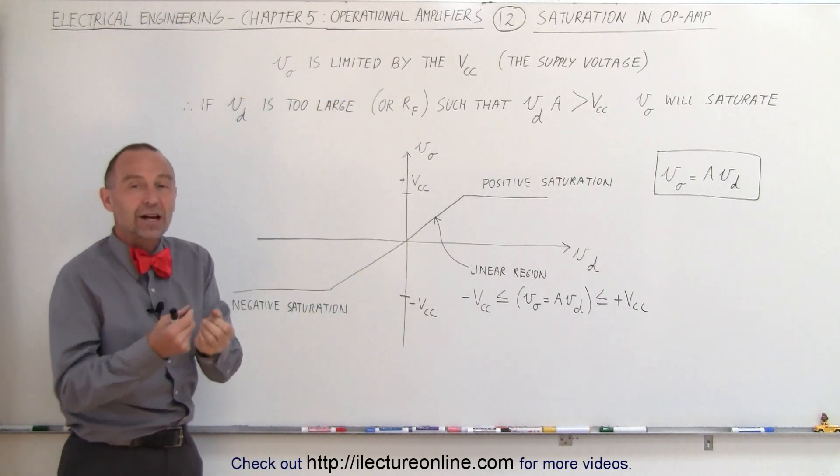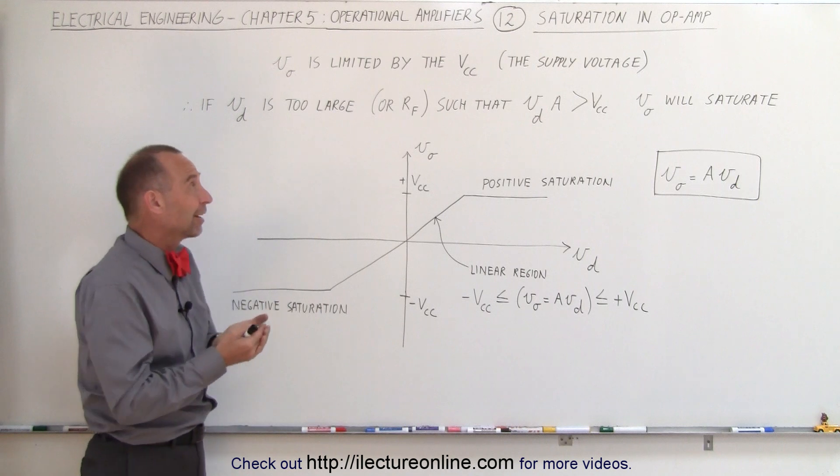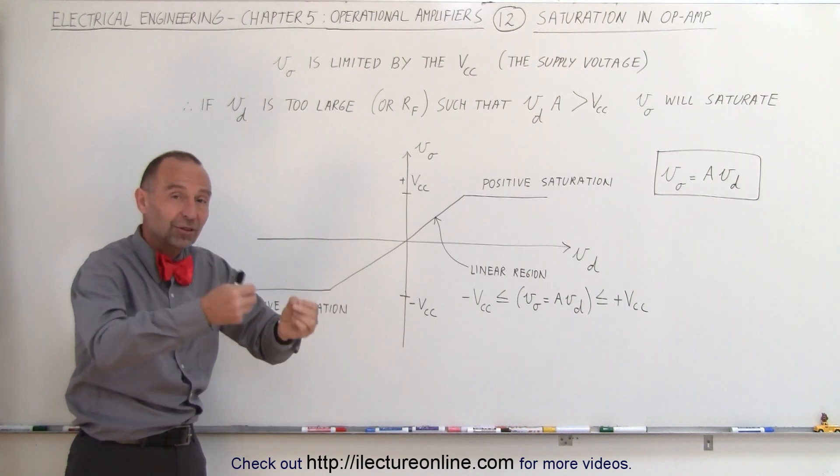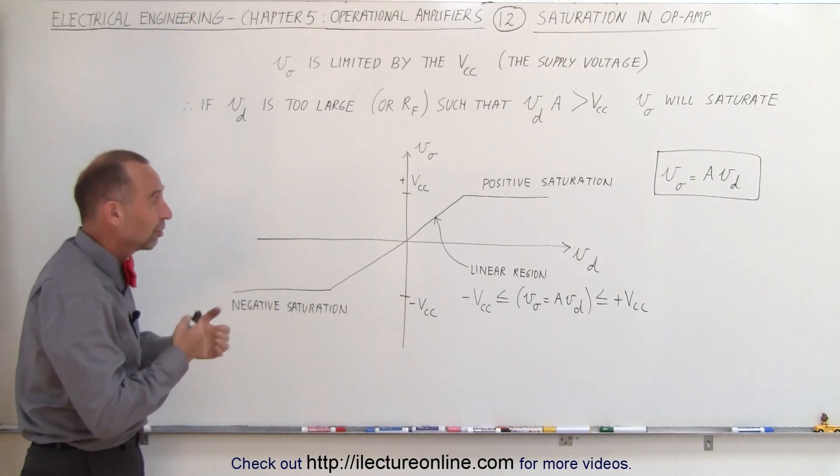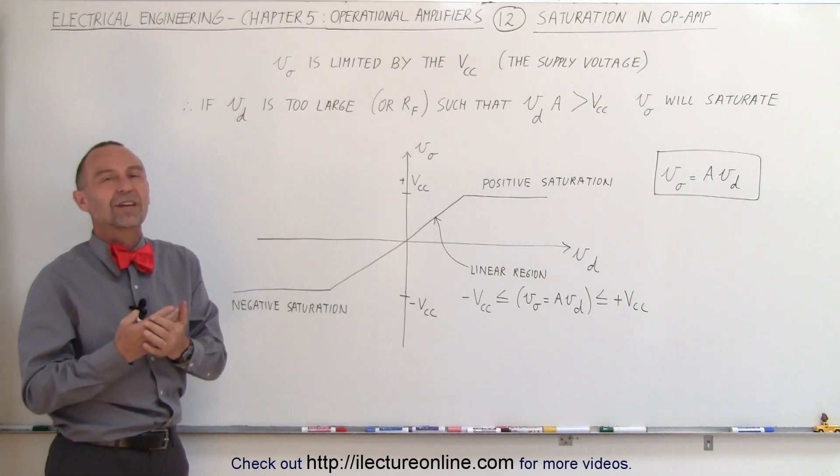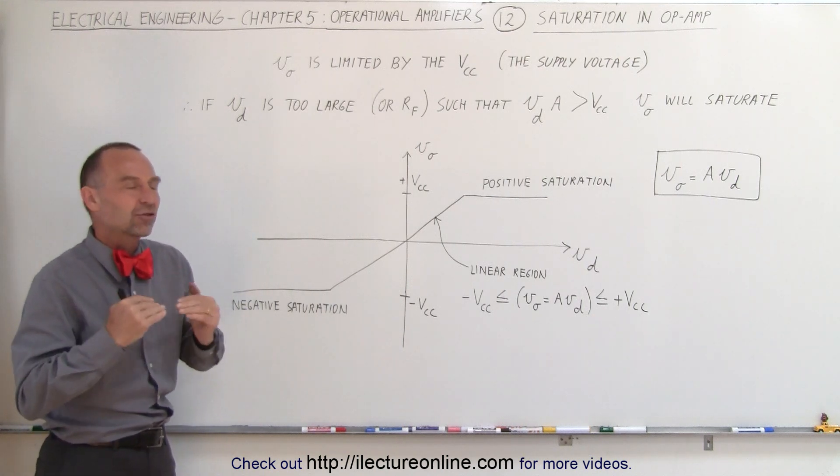In other words, you cannot get more voltage out of the operational amplifier than the power supply puts onto the operational amplifier. So there's a limit there, and if you try to exceed that limit, we say the operational amplifier saturates.